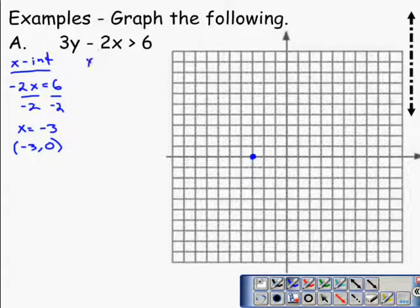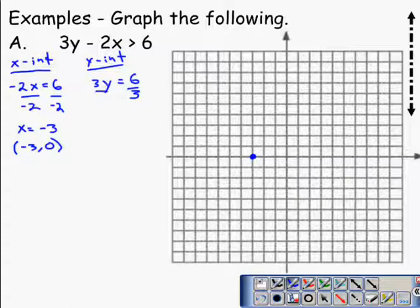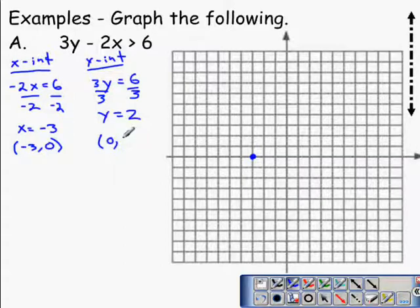Then we go ahead and find the y intercept. To find the y intercept, we choose x to be equal to 0, which will make this x term go away, leaving us with 3y is equal to 6. We divide each side of this by 3, giving us y is equal to 2, or the ordered pair x is 0, y is 2. We plot that point, x is 0, y is 2.